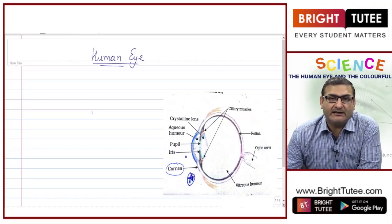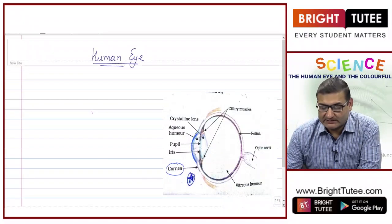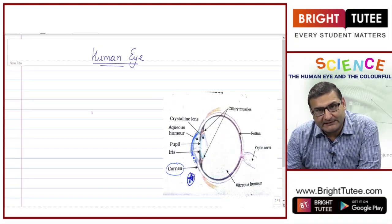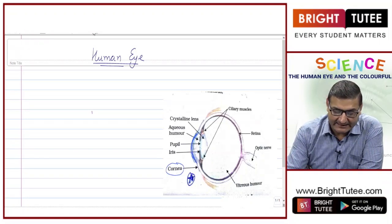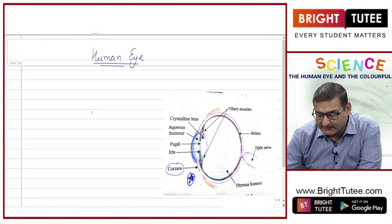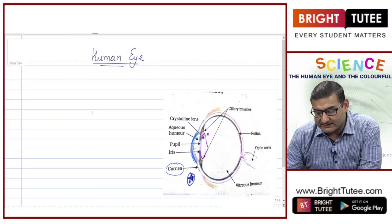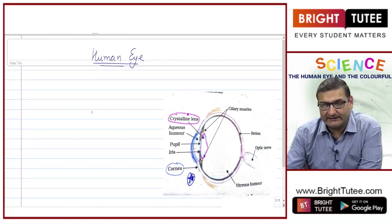The cornea is convex in shape, so it bends or converges the light rays entering the eye. Next, we have the crystalline lens, also known as the eye lens.